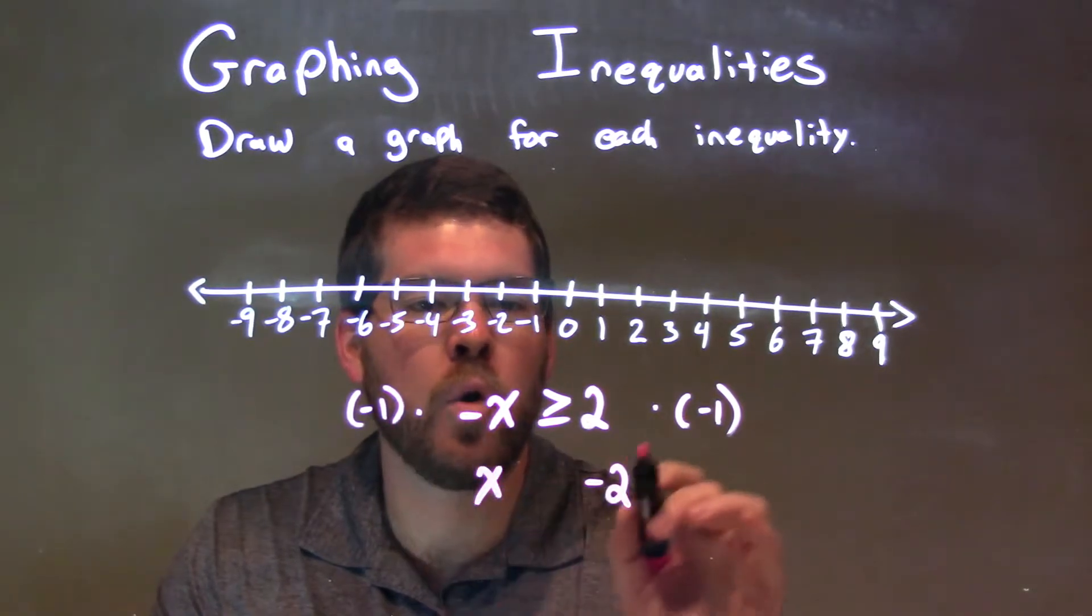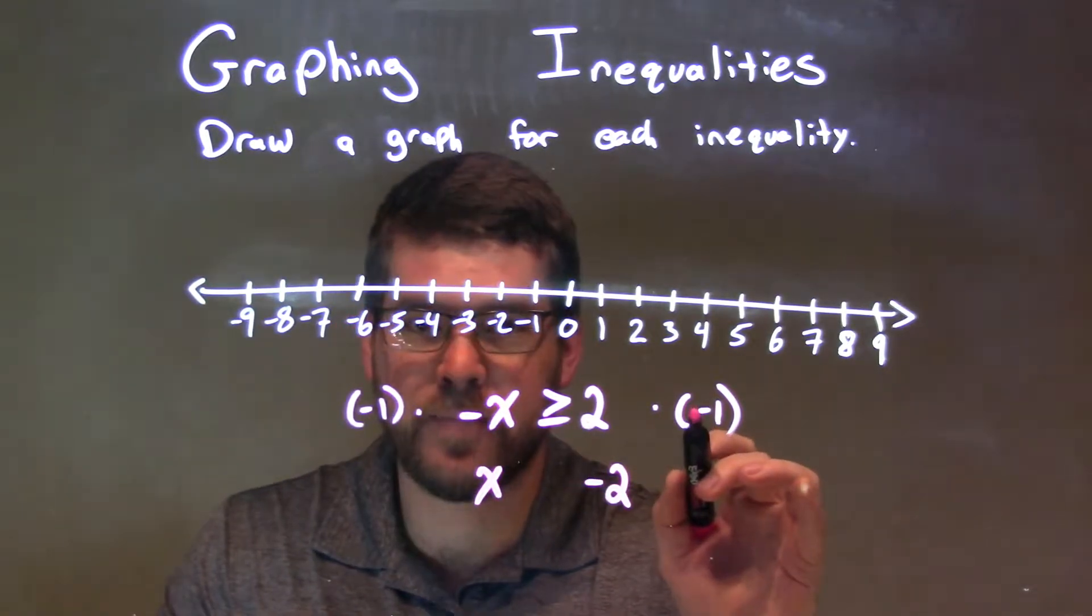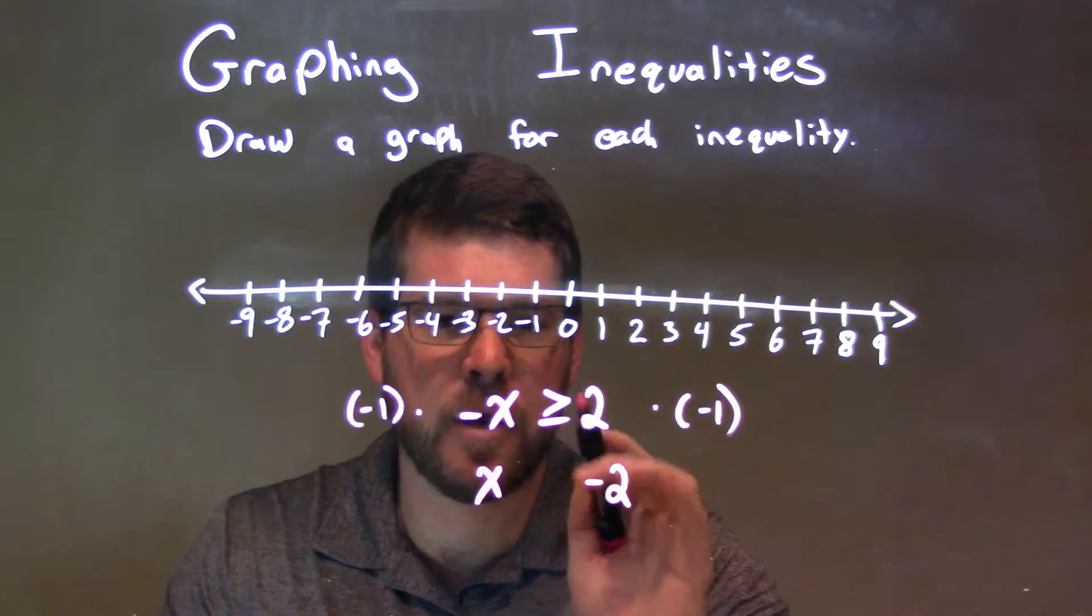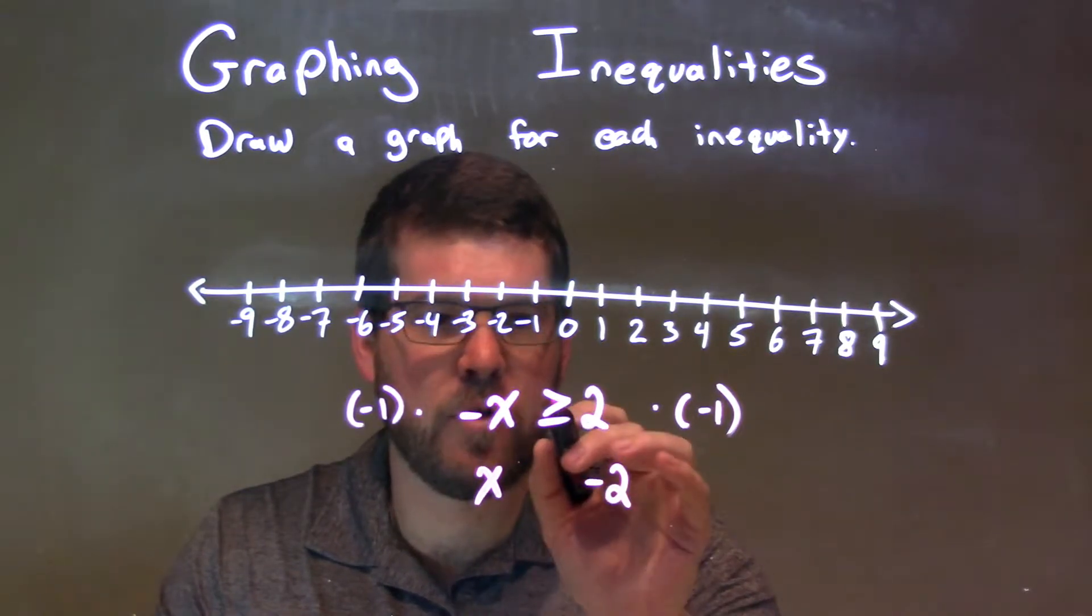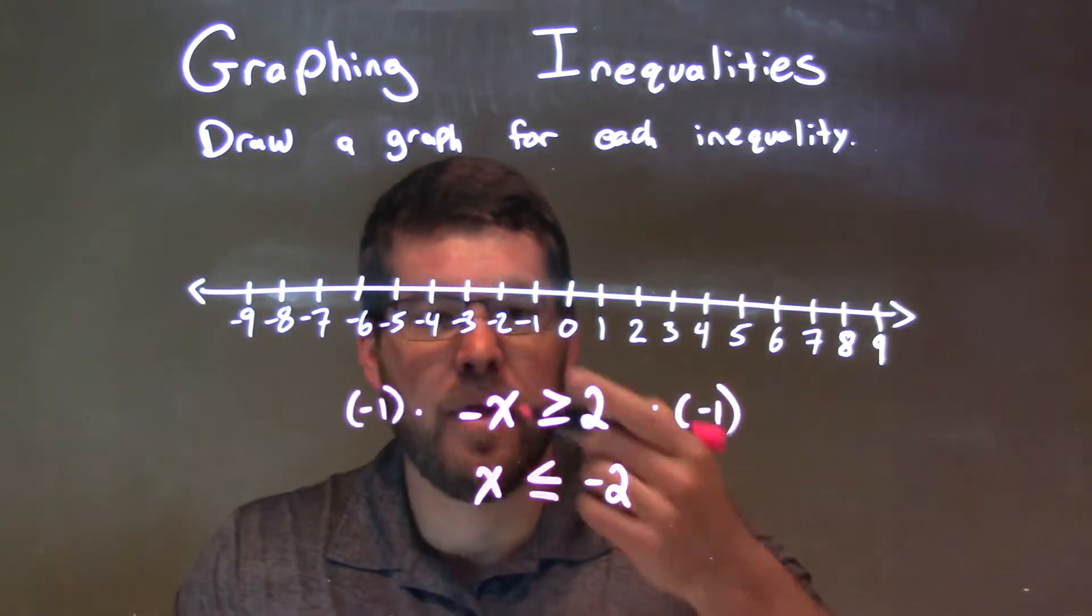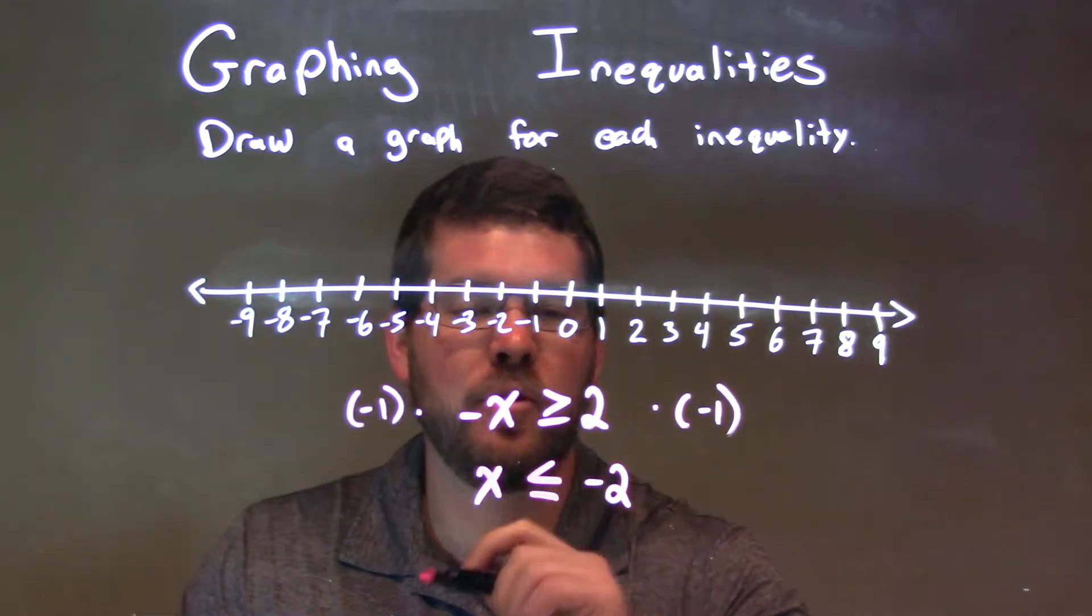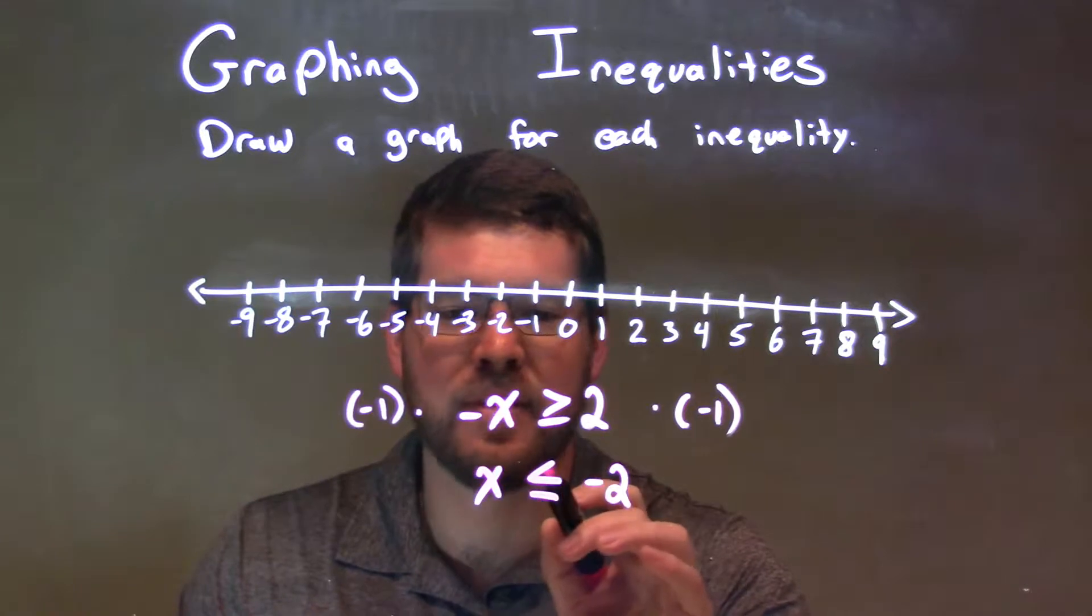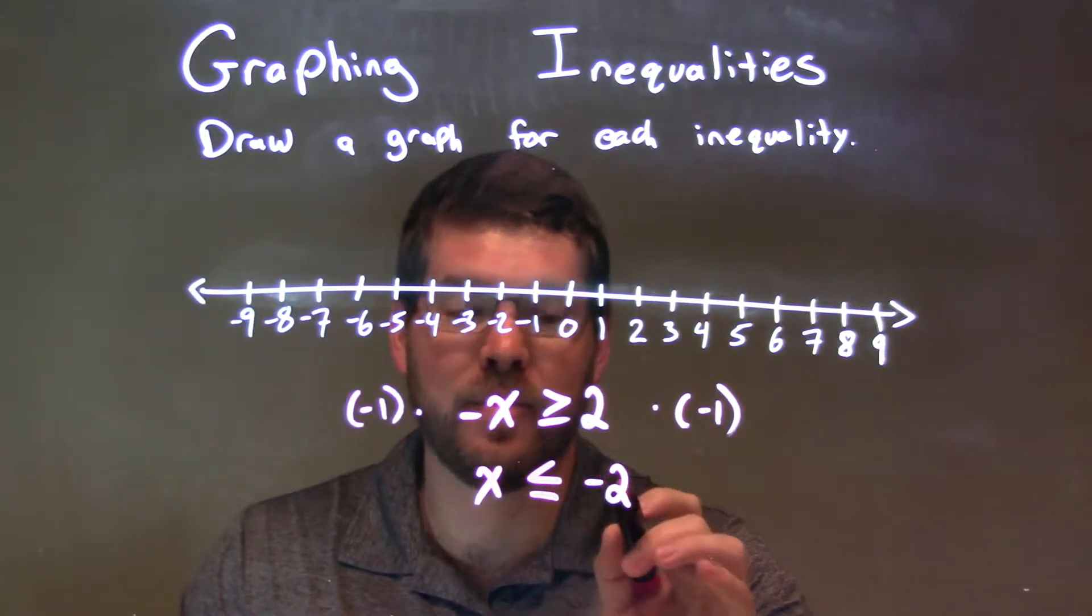But since we multiply over an inequality, the sign switches. So our greater than or equal to sign becomes less than or equal to. And so now, negative x is greater than or equal to 2 is the same thing as x is less than or equal to negative 2.